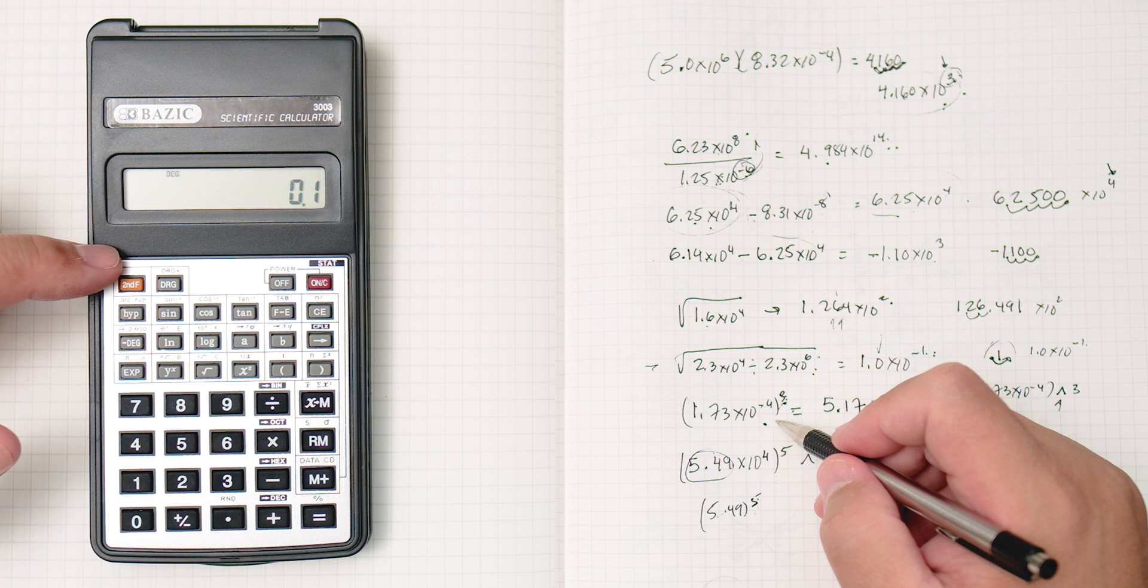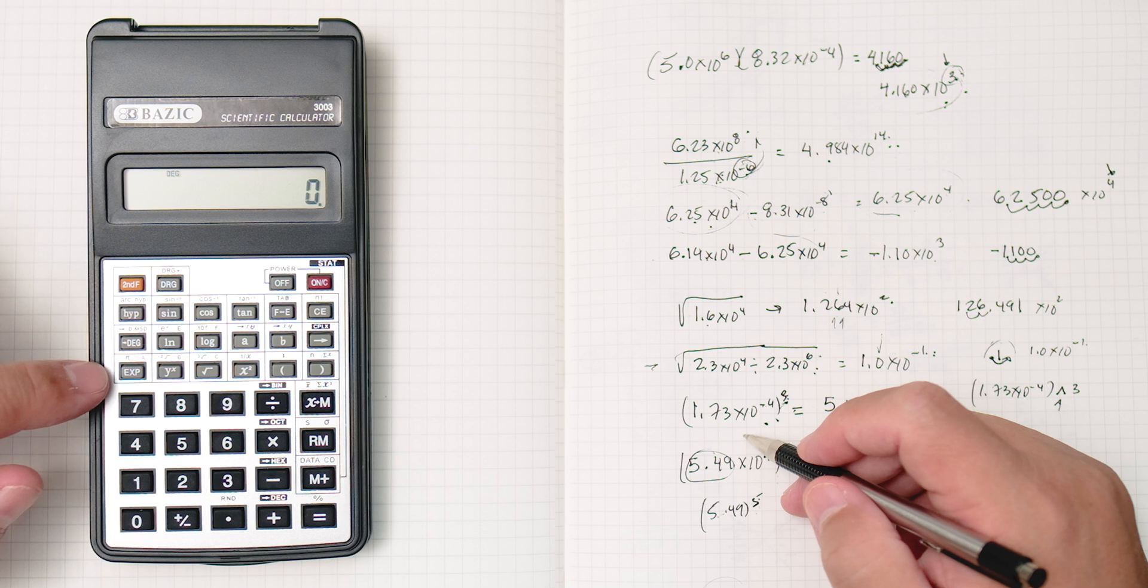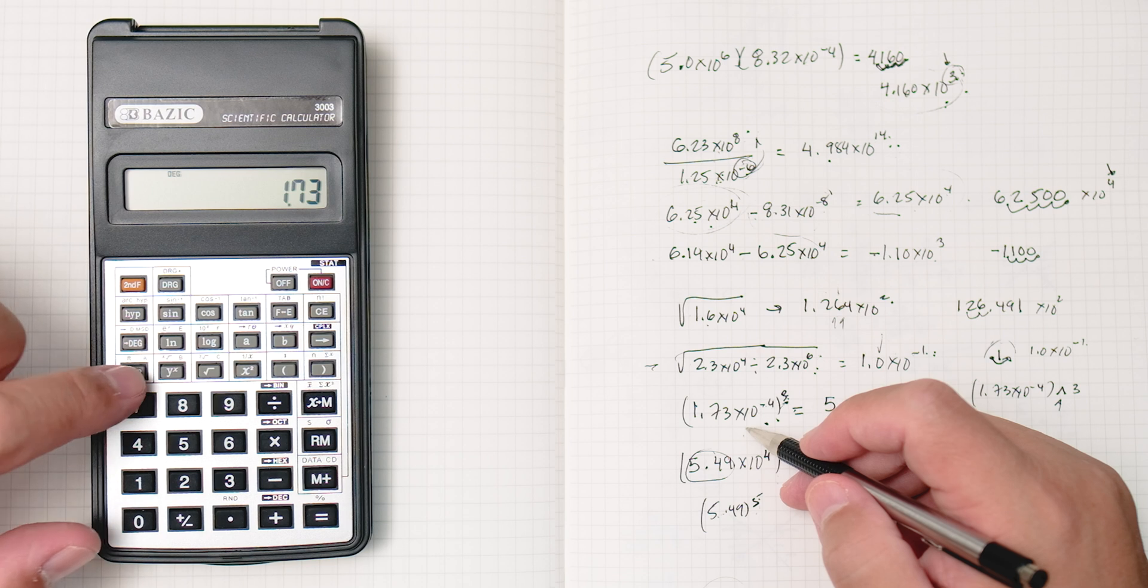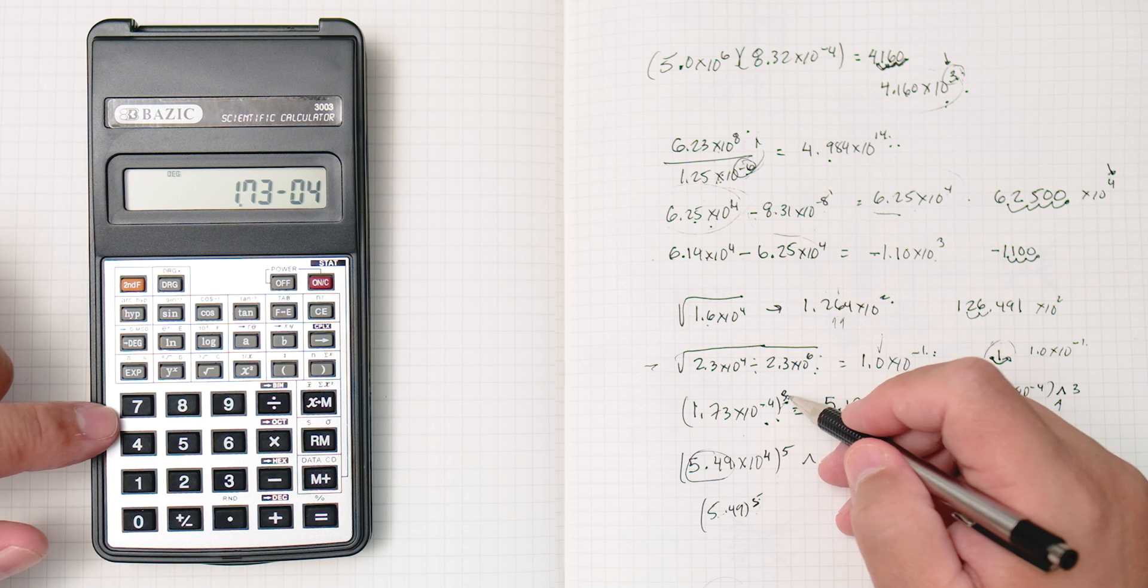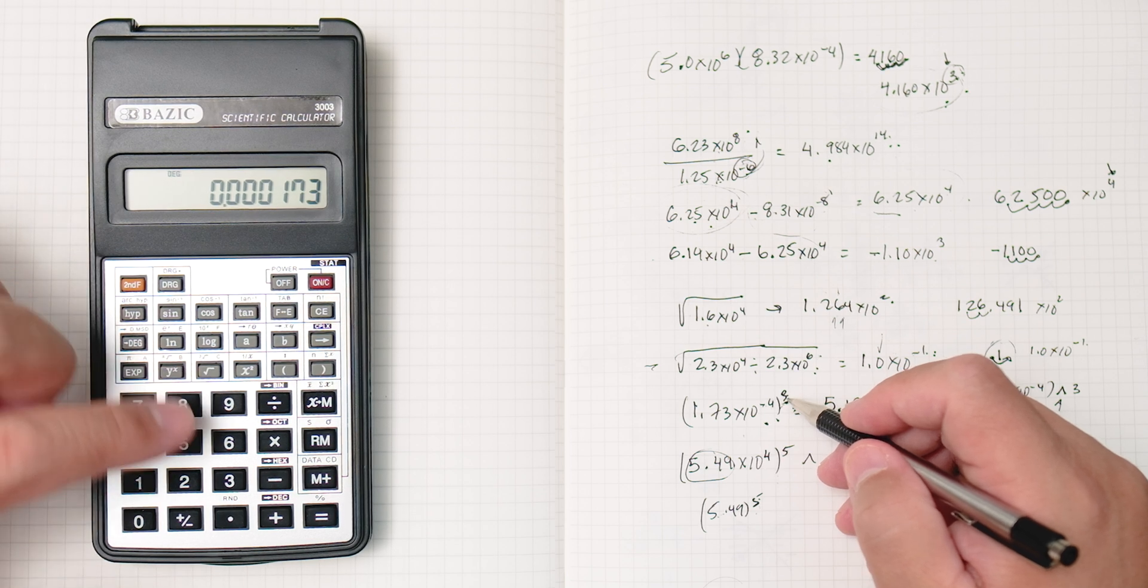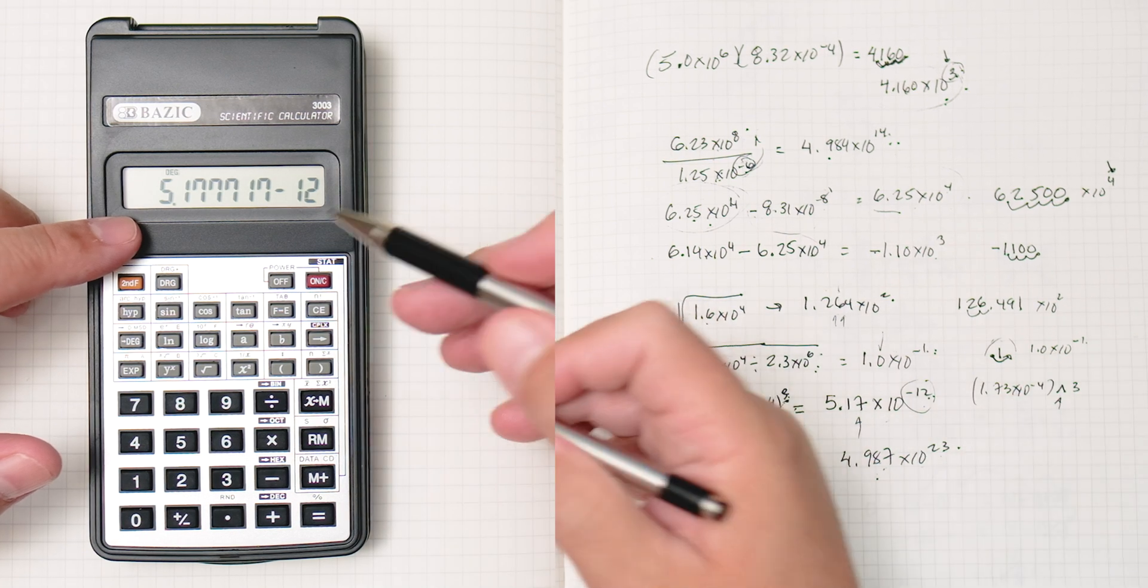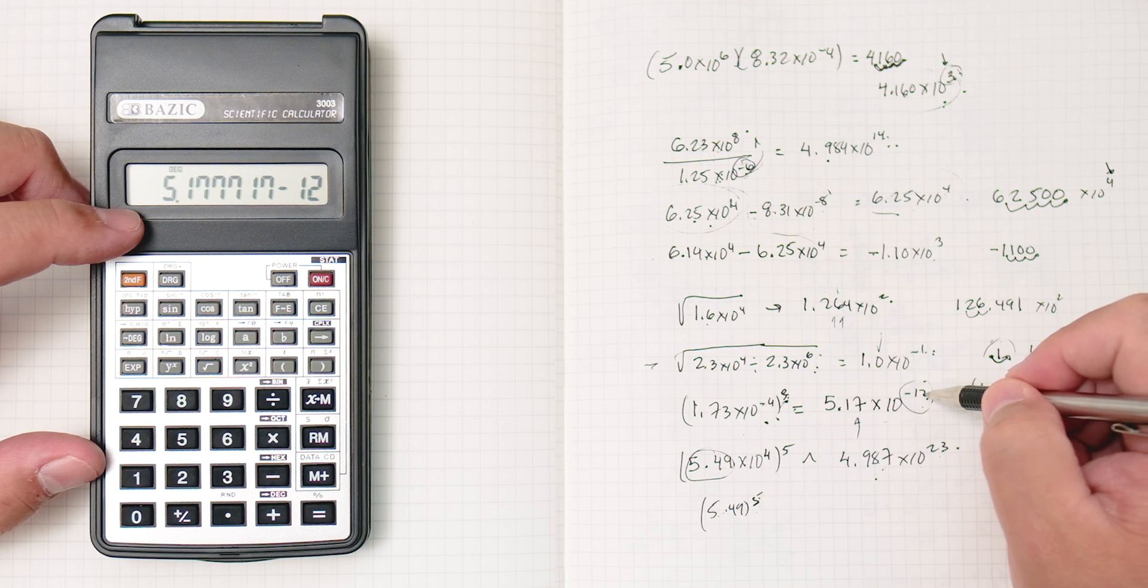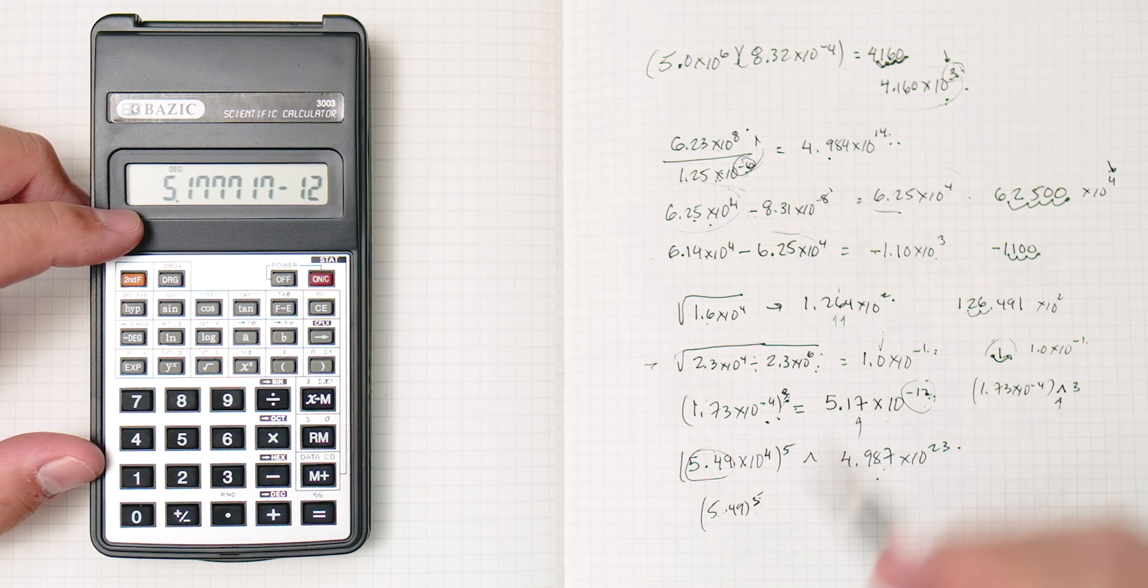This one, let's see if we can do this one. So we're going to turn this off. So we go 1.73 times 10 to the minus 4. And we're going to do it to the 3rd power. So we're going to press this button here, y to the x, and then to the 3rd power. Enter. 5.17 times 10 to the negative 12. It did do this one. Negative 4 times 3 is negative 12. And then this 3 has to multiply this 3 times, and then it gives you 5.17.